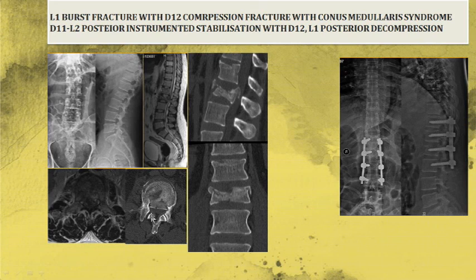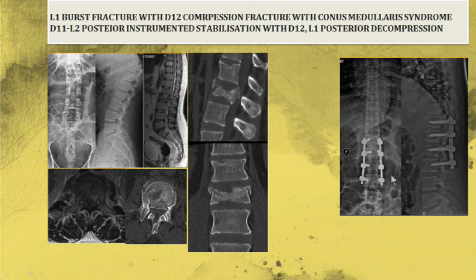In the burst fracture case, the fracture fragment can be taken care of by removing it, decompressing the canal, and stabilizing the spine so that there is no further neurological injury.